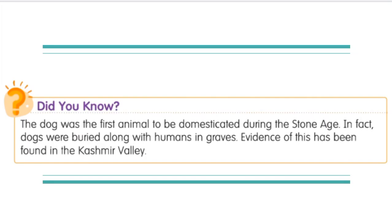Did you know the dog was the first animal to be domesticated during the Stone Age? Even today, many of us keep dogs as pets. In fact, dogs were buried along with humans in graves, and evidence of this has been found in the Kashmir Valley. It is important that everybody remembers what we learned today.